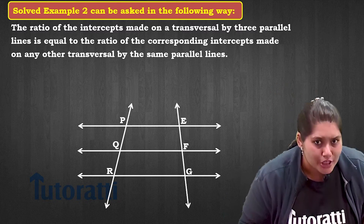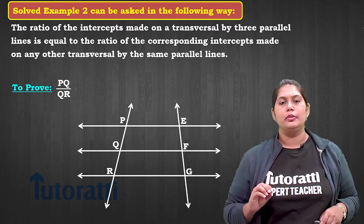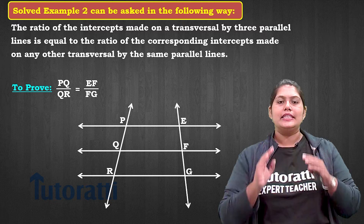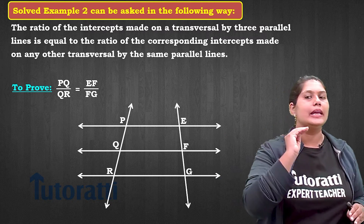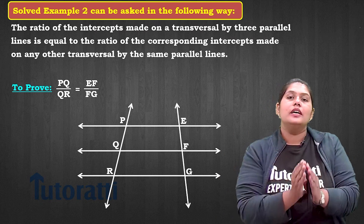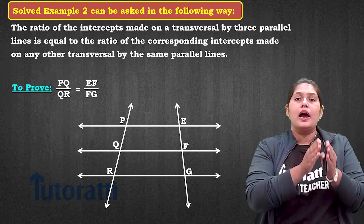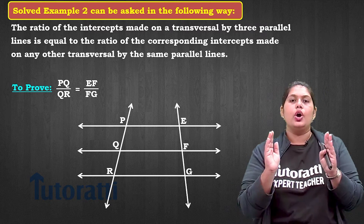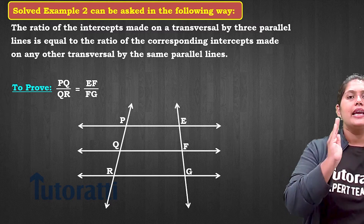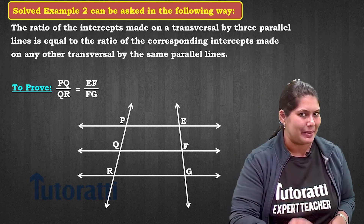The statement says that the intercepts from both transversals have the same ratio. In other words, PQ upon QR is equal to EF upon FG. This means that if you have three parallel lines with transversals, the intercepts formed by the parallel lines on both transversals are in the same ratio. You need to understand that PQ upon QR equals EF upon FG.